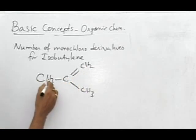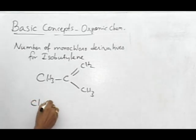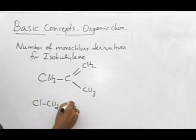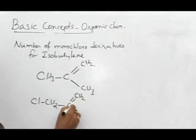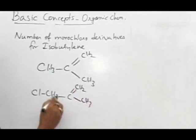From this carbon, one hydrogen is removed. Now we have Cl, CH2, then C, double bond, CH2, here CH3. This is one derivative.